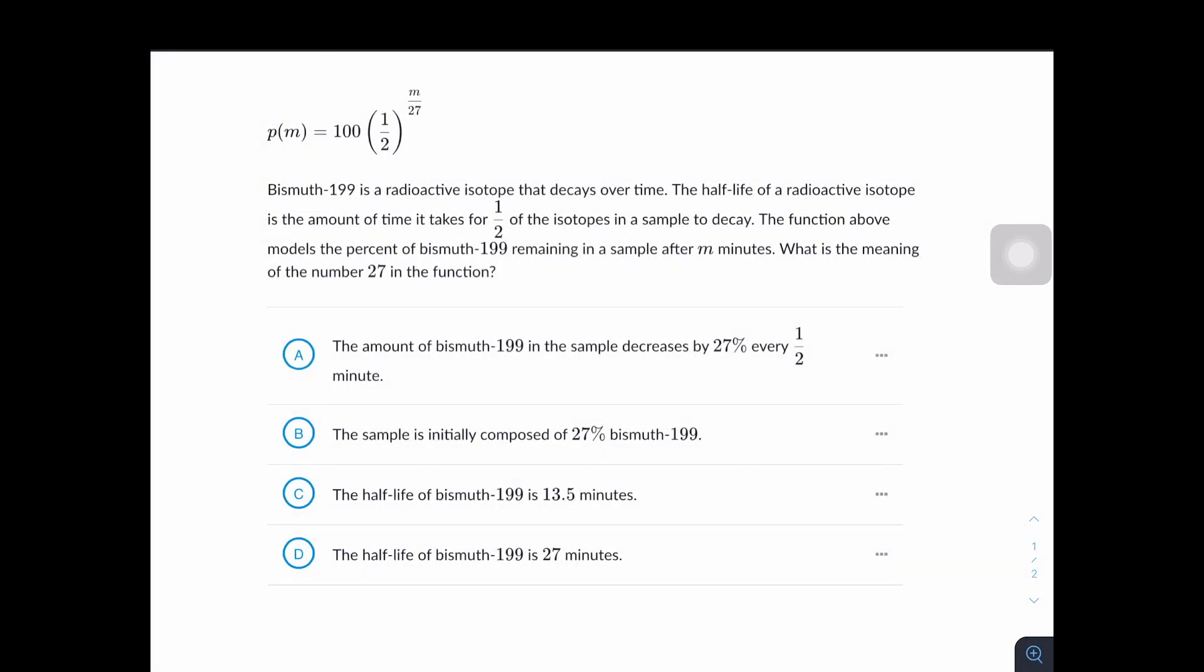Bismuth 199 is a radioactive isotope that decays over time. The half-life of a radioactive isotope is the amount of time it takes for one half of the isotopes in a sample to decay. The function above models the percent of bismuth 199 remaining in a sample after m minutes. What is the meaning of the number 27 in the function?